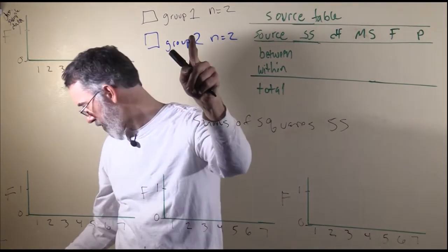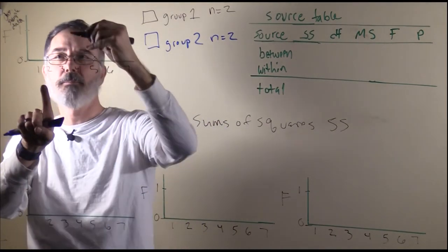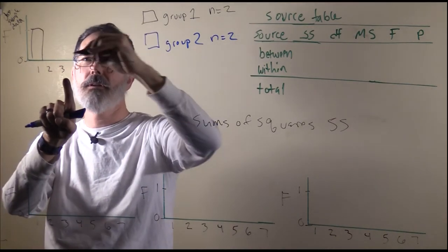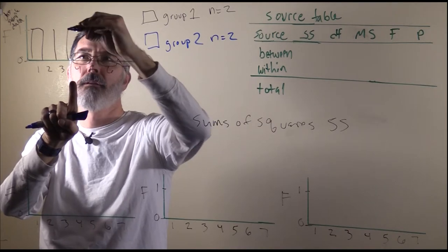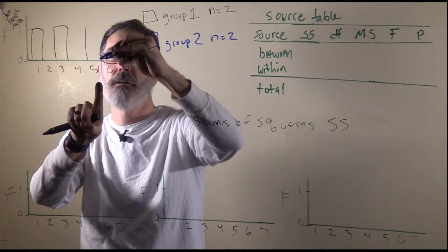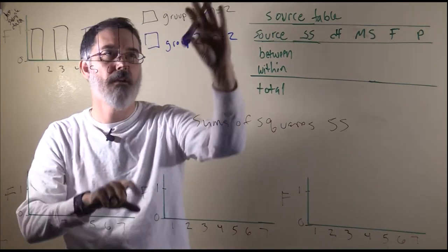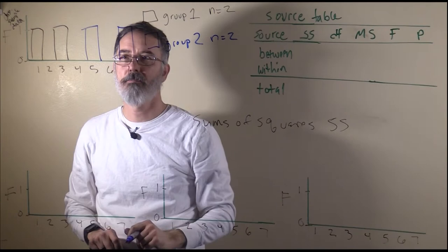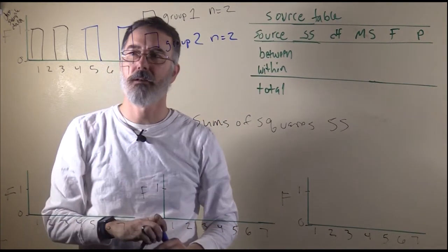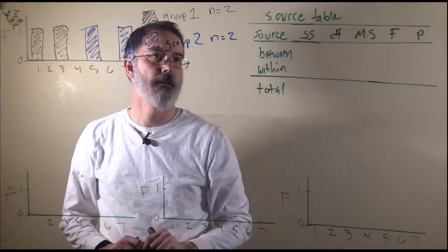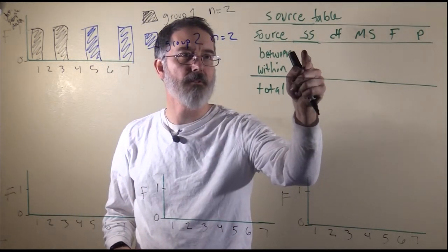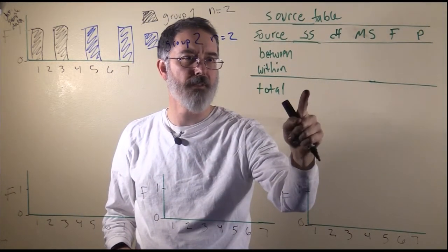Group 1 has two people in it. One person has a 1 and another person has a 3. For group 2, one person has a 5 and the other person has a 7. Our total sample size is 4. With the sums of squares approach, we are going to directly calculate the sums of squares between, the sums of squares within, and the sums of squares total. That is what these three distributions are for.